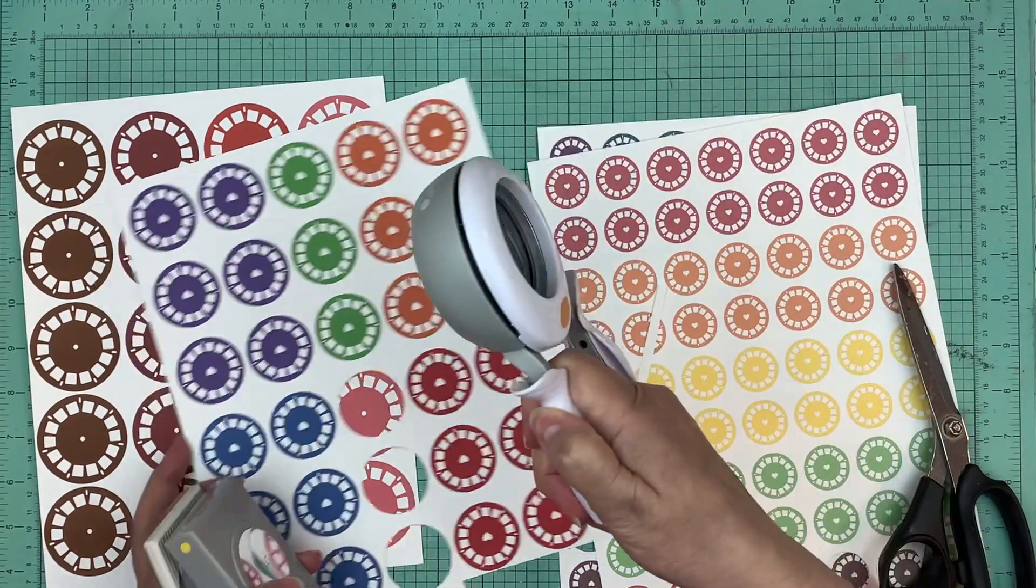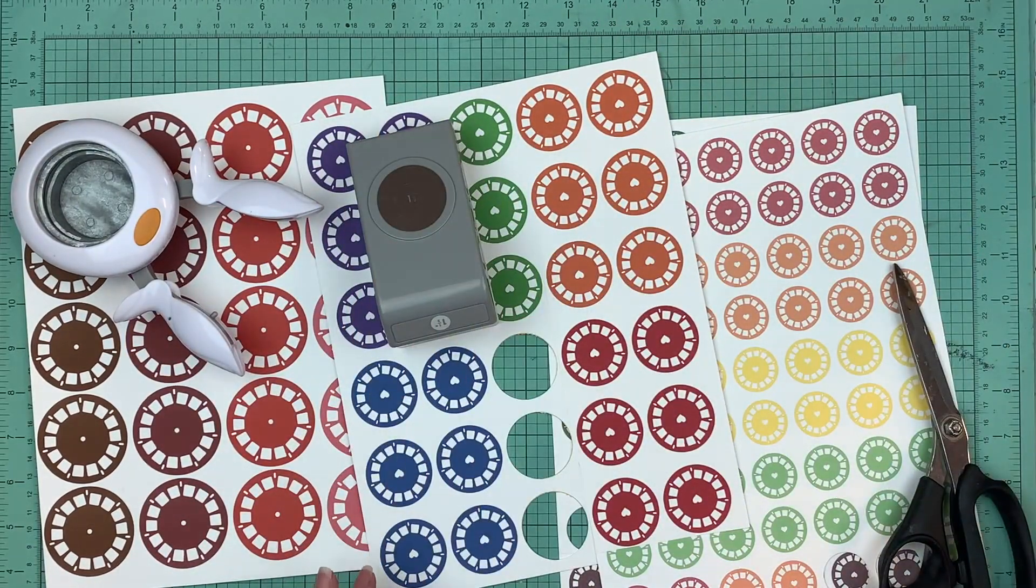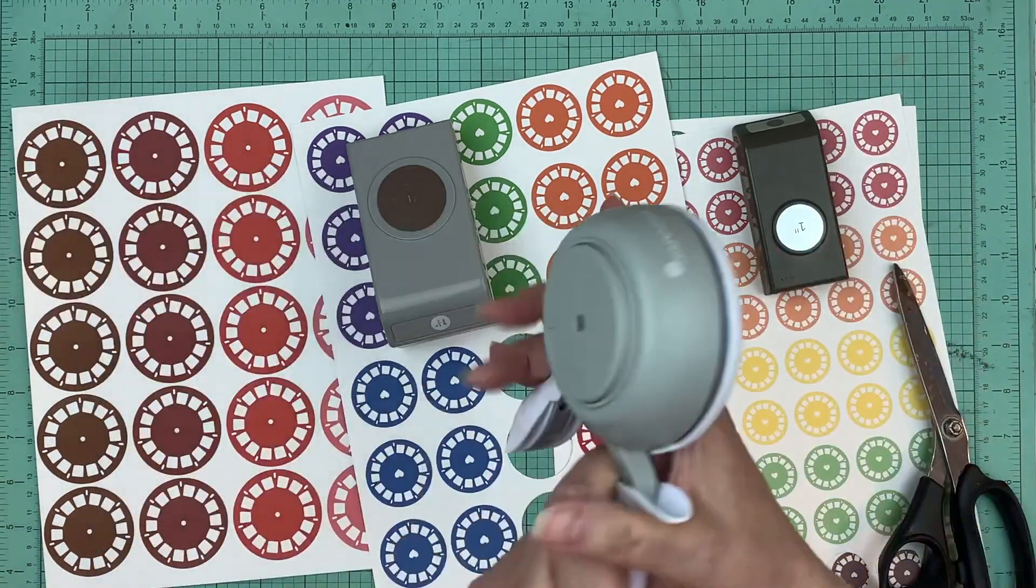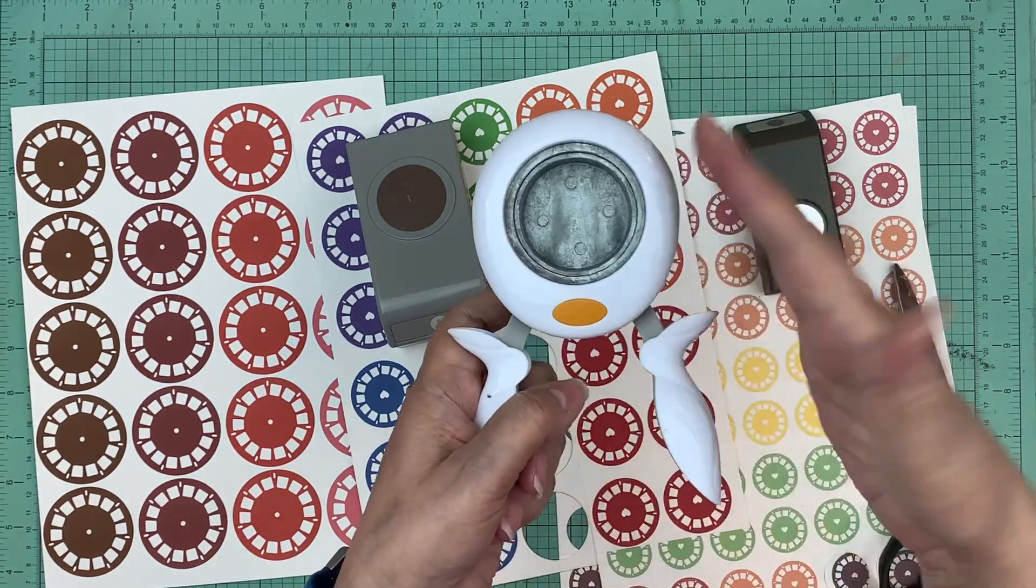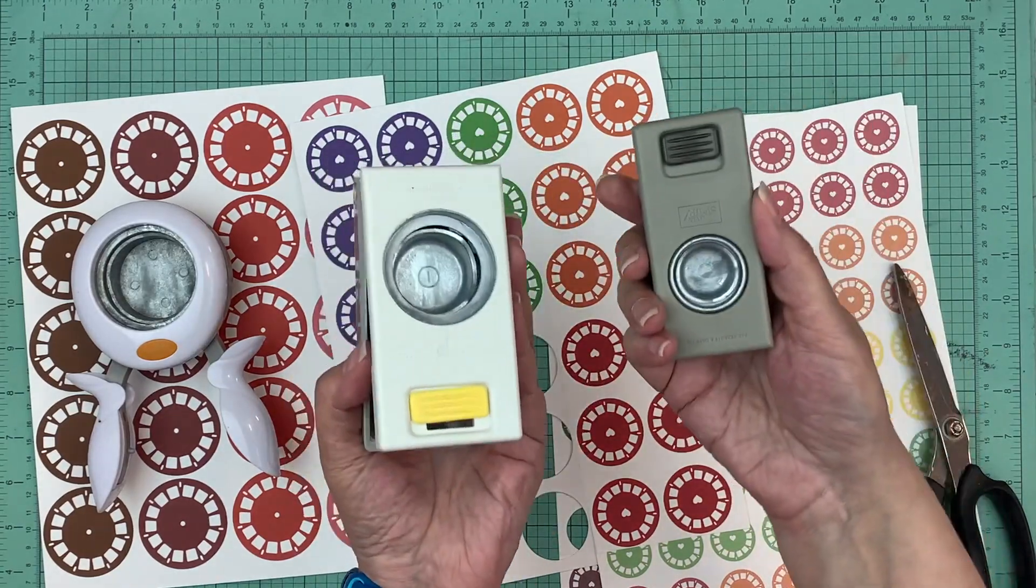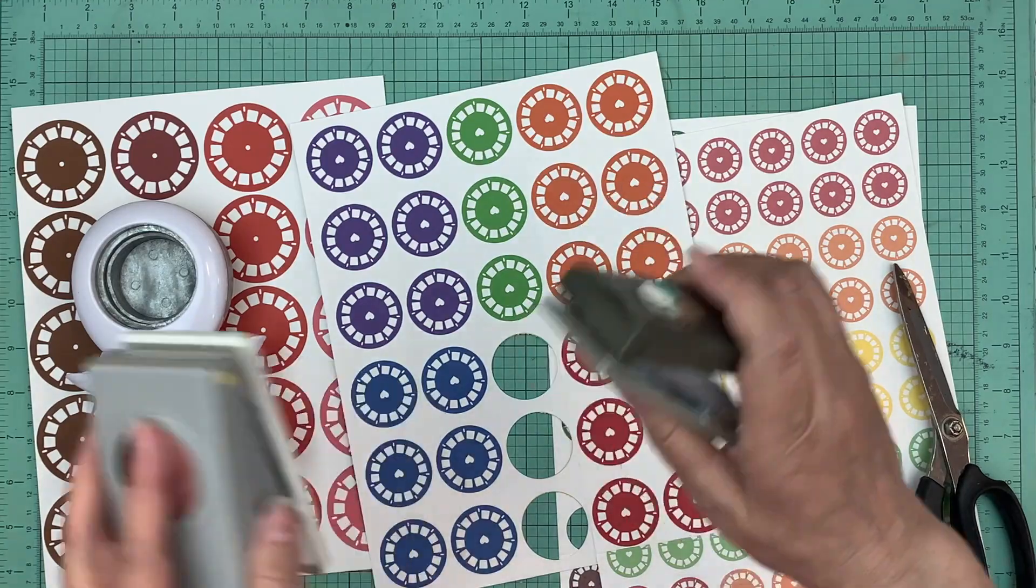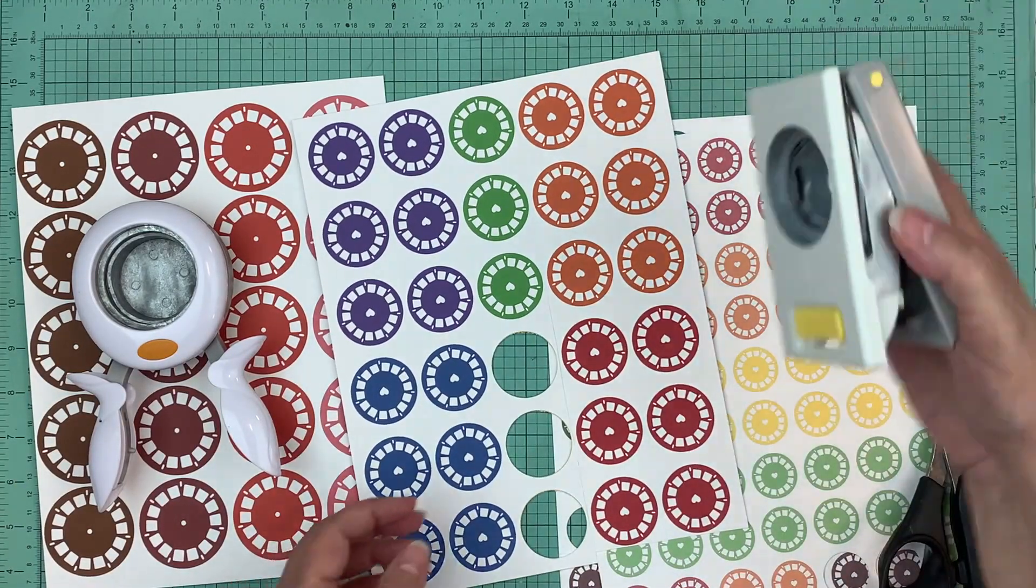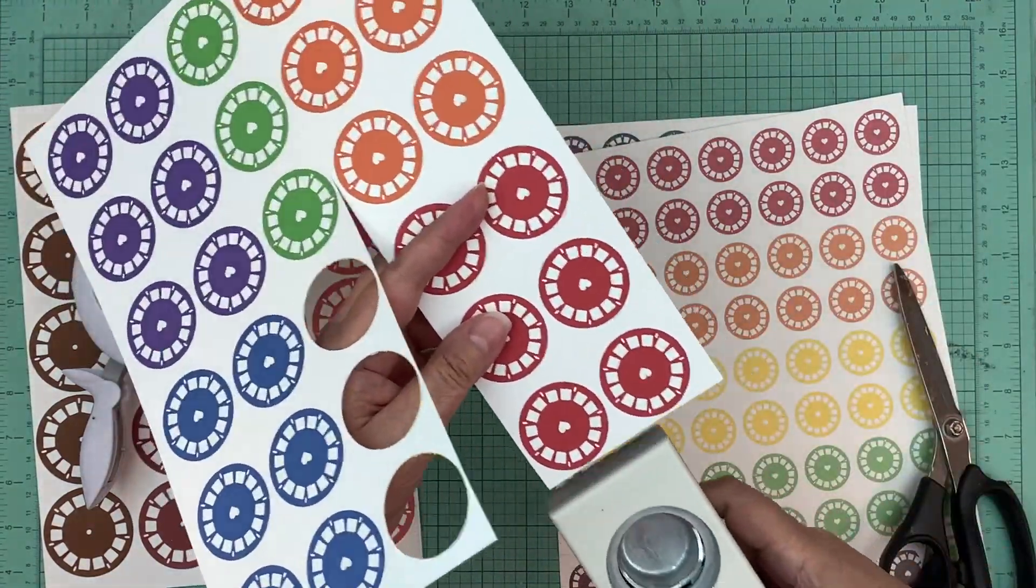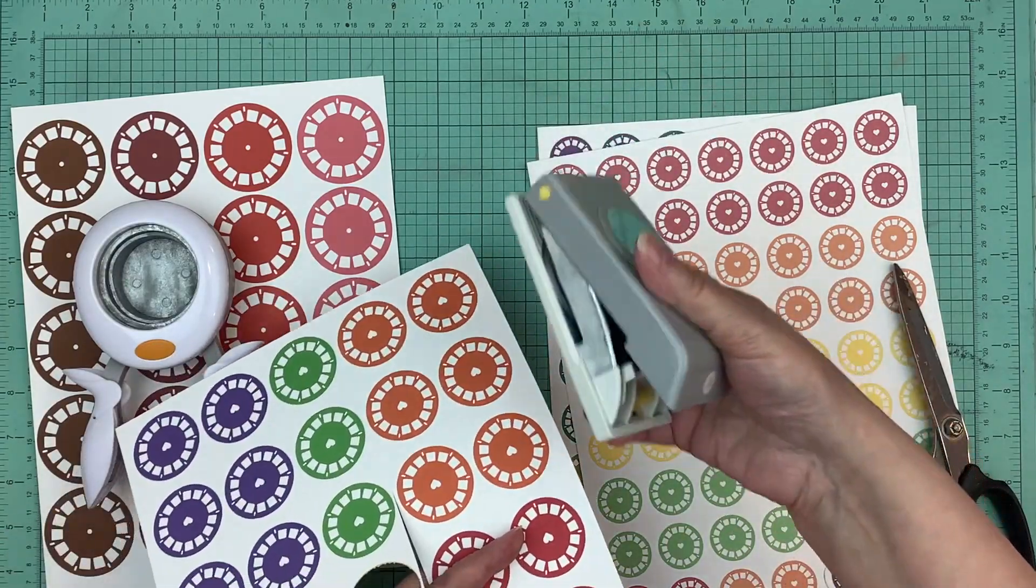So every punch, what you can do, this is the one and a half. Like for all of these, what I need is a two inch punch that will be for that one. The one and a half inch punch is for this one, and then the one inch punch is for this one. Now I'm not sure which brand this is but I just got it on Amazon. These two are EK success punches, but actually this is an EK success and this is a Stampin' Up, but it's the same principle for everything.